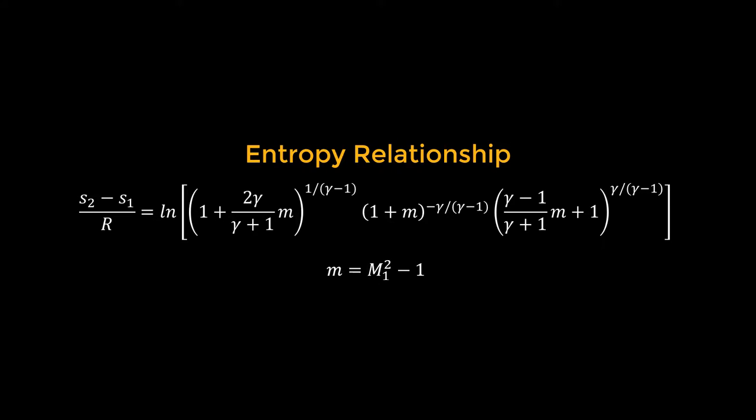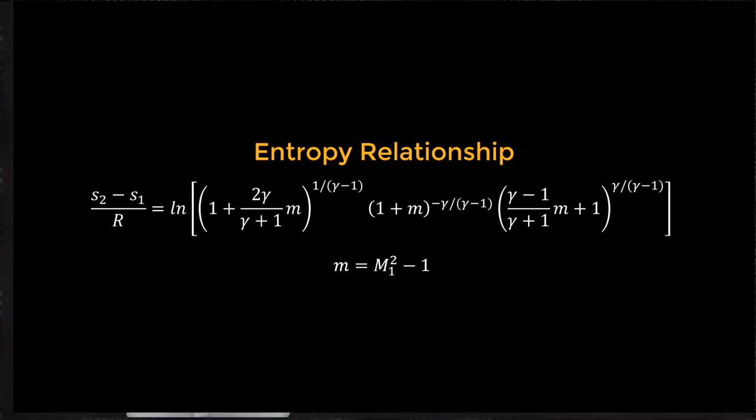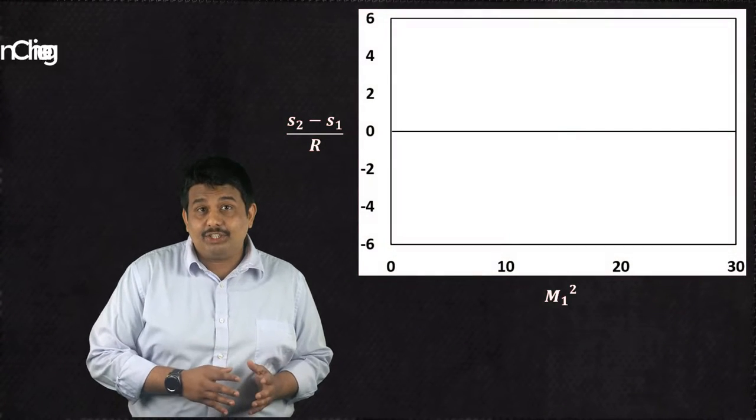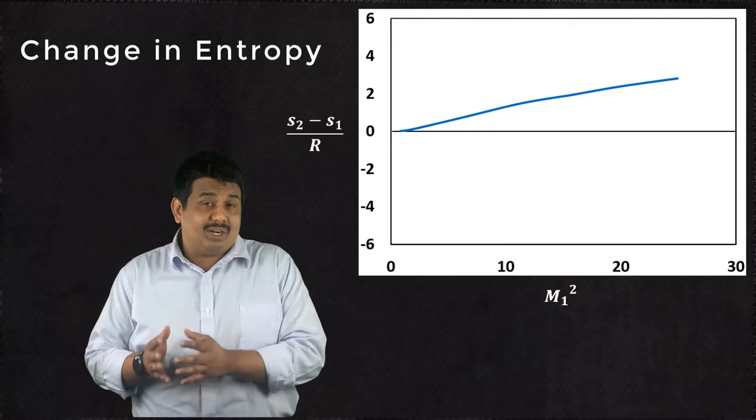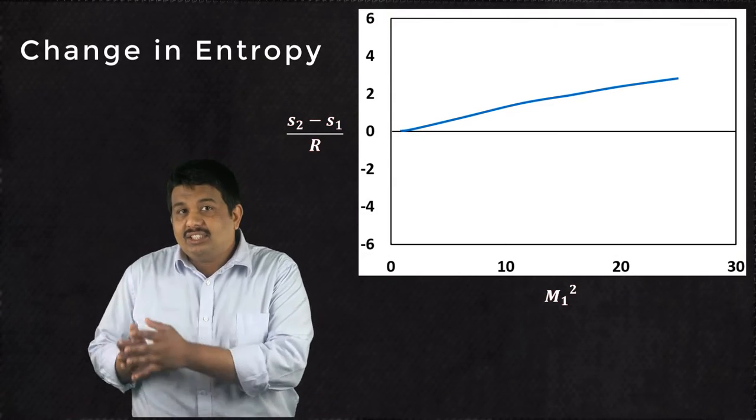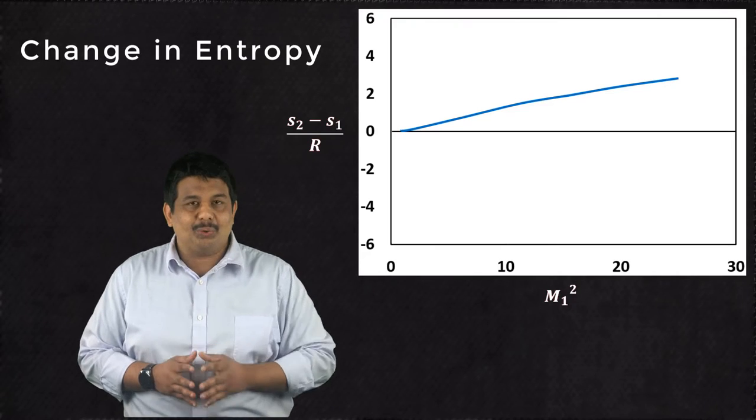Here, the definition of M is based on the upstream Mach number. The plot of the ratio of change in entropy and R versus the flow Mach number just before the normal shock is shown here.